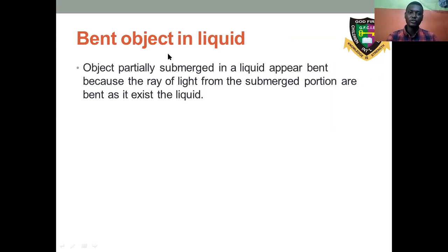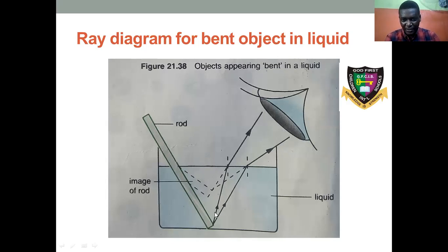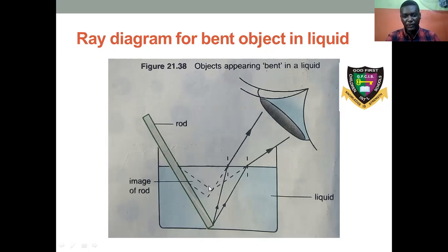The second effect is a bent object in liquid — basically the same principle. The rod appears to bend from one side. If you view it from another angle, because of refraction, there will be an apparent broken image. Notice that when rays leave the bottom of the rod, they bend away from the normal — they are not going directly. That bending away causes the refraction, and that refraction produces an image where the rod appears broken or bent.